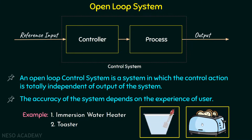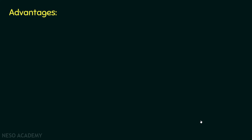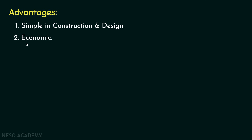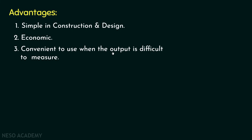Now let's move on to the advantages of using an open loop system. The first advantage is it is simple in construction and design because it does not have a complex mechanism. Also, it is economic because it does not have many elements and the circuitry is simple. It is also convenient to use when the output is difficult to measure.